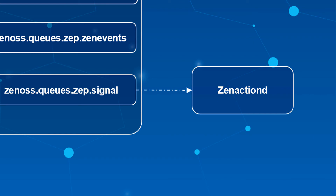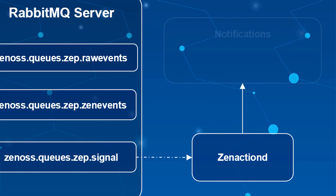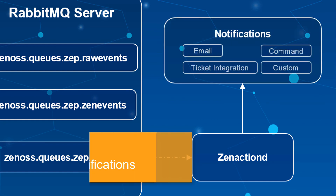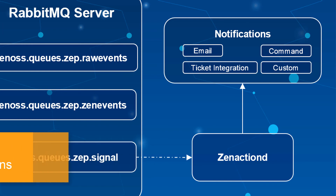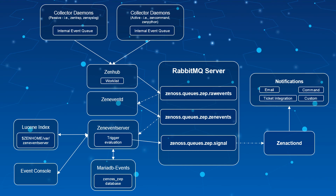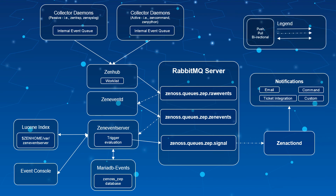ZenActionD compares incoming trigger signals against any matching and enabled notifications. If any are found, ZenActionD then executes the corresponding notification, whether it's an email, command, a ticket integration, or some other custom code. And that's the Resource Manager event processing pipeline from start to finish. I hope you found this information useful. Thanks for watching, and have a great day.